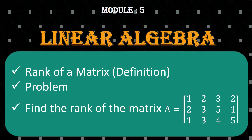Hello students, in today's class in linear algebra we will see rank of a matrix — its definition and notation. Then we'll see problems based on rank of the matrix. The first problem is: find the rank of matrix A equal to [1, 2, 3, 2 / 2, 3, 5, 1 / 1, 3, 4, 5]. We'll see the solution of this problem and what is the rank of the matrix.